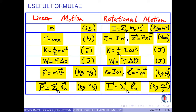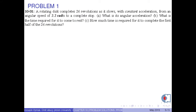Now it is time to discuss the problem. A rotating disk completes 26 revolutions as it slows with constant acceleration from an angular speed of 2.2 radians per second to a complete stop. In part A, find its angular acceleration. In part B, find the time required for it to come to rest. And in part C, find the time required for it to complete the first half of the 26 revolutions.